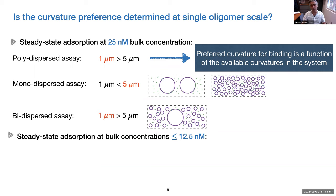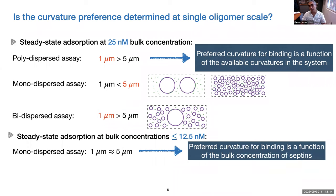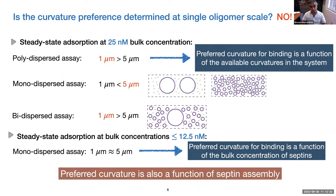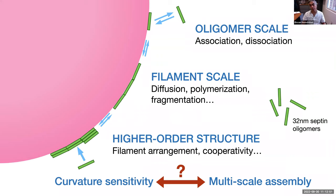This points to the fact that preferred binding may be a function of the available curvatures in the system, not determined at the single septum scale. Additionally, reducing the bulk concentration of septins causes loss of curvature sensitivity, showing that bulk concentration also matters. All of these indicate that single oligomer scale is not the determining factor. The preferred curvature may be a function of septin assembly — perhaps curvature sensitivity is an emergent property of the system.